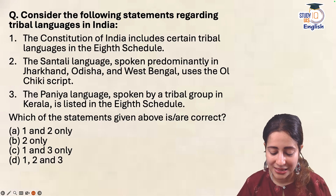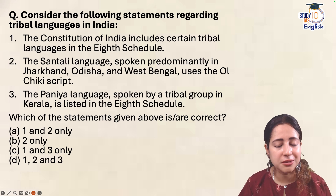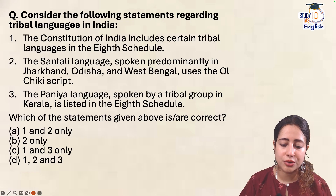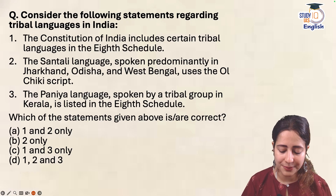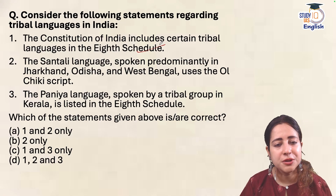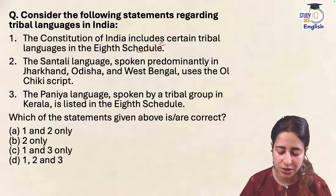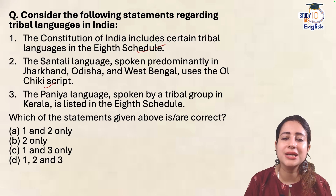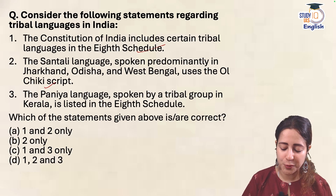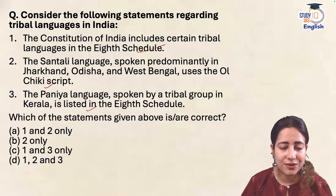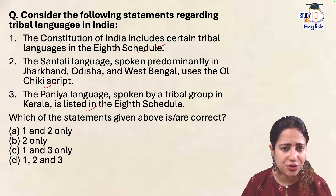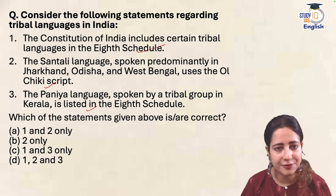Let's look at the practice question. Consider the following statements regarding tribal languages in India: One, the Constitution of India includes certain tribal languages in the 8th Schedule. Two, the Santhali language, spoken predominantly in Jharkhand, Odisha, and West Bengal, uses the Ol Chiki script. And three, the Paniya language spoken by a tribal group in Kerala is listed in the 8th Schedule. Which of these is or are valid? It's a slightly tricky question — I have posted the answer here for self-checking.